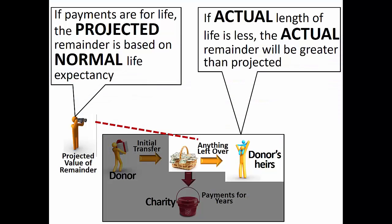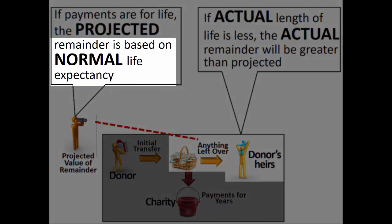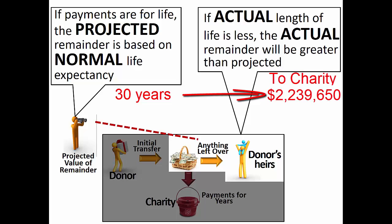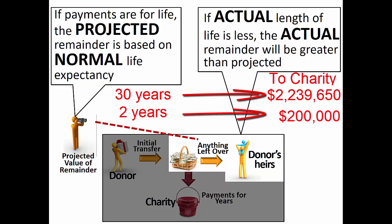For charitable lead trusts paying to a charity for a lifetime, the actual amount left for the non-charitable beneficiary depends not only on the rate of growth of the assets, but also on the length of the measuring life. For example, if a charitable lead trust pays $100,000 per year for the life of a person whose age suggests a life expectancy of 30 years, the present value of that charitable payment would be $100,000 times 22.3965, or $2,239,650, at the 2% Section 7520 rate. However, if the person lived for only two years, the actual payments to charity would total only $200,000.